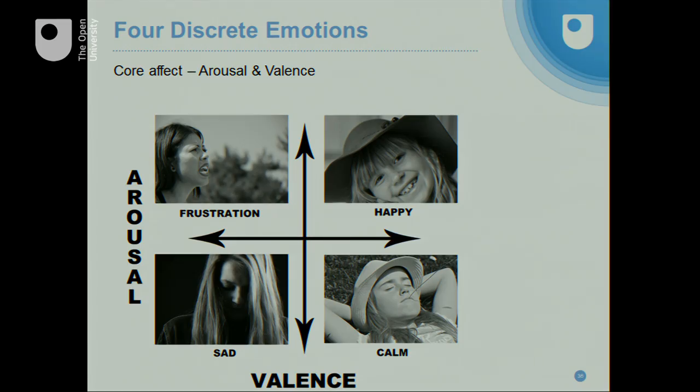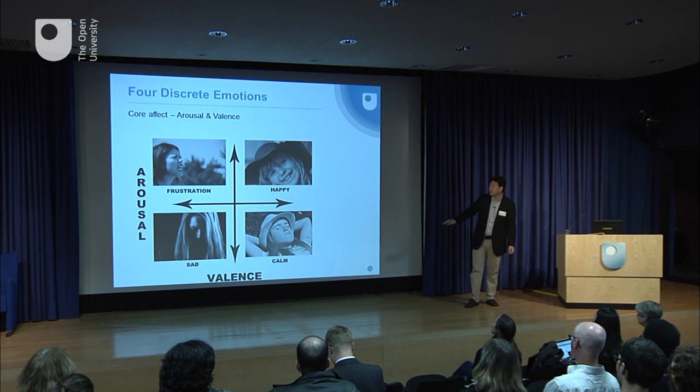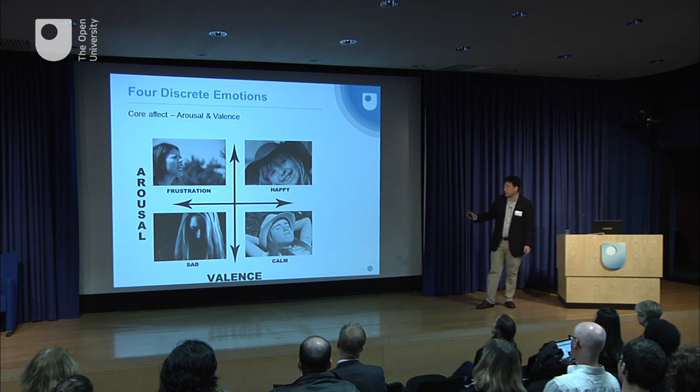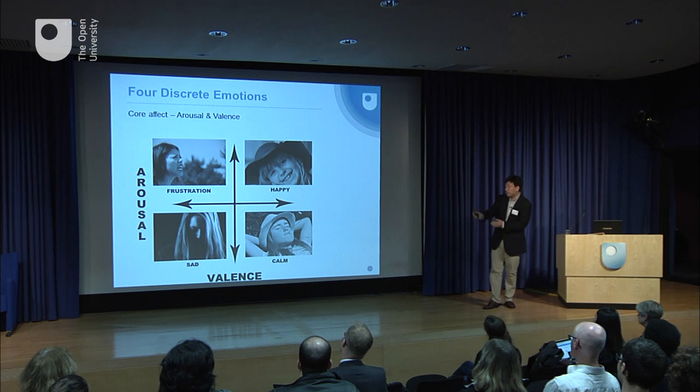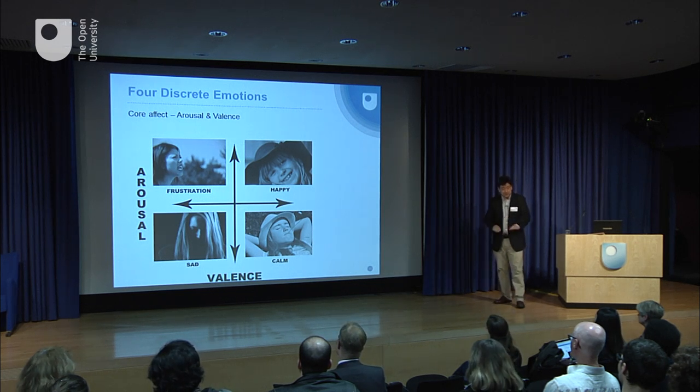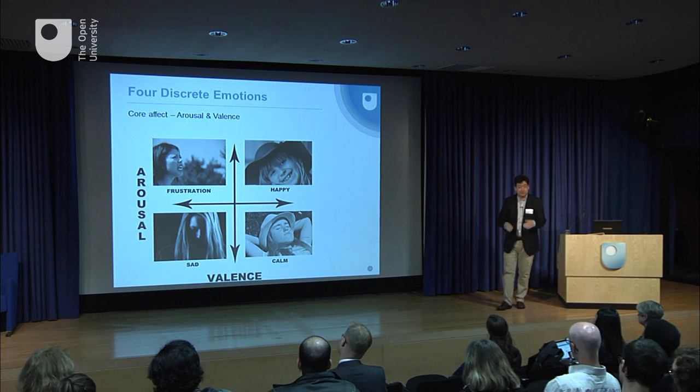You can actually organize discrete emotions in dimensions. What I've shown here is the core affect dimensions of arousal and valence. The negative emotions are on the left side, the positive emotions on the right, low energy emotions on the bottom, and active high energy ones on the top. This is considered to be a universal categorization of emotions, researched across cultures.